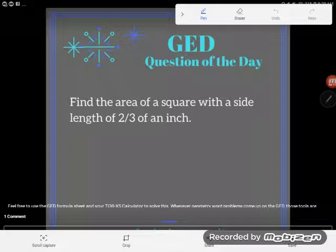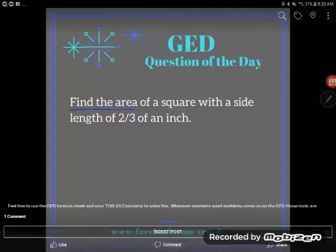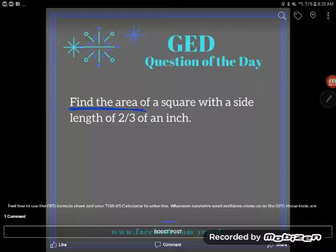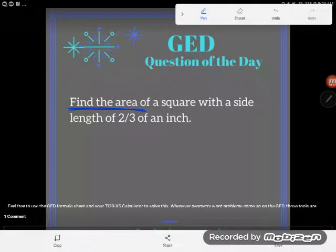Let's take a look at this particular problem. It's a pretty straightforward one as far as GED ones go. One little trick, we have a fraction, but don't worry about that. So I see the problem says find the area of a square with a side length of two-thirds of an inch.